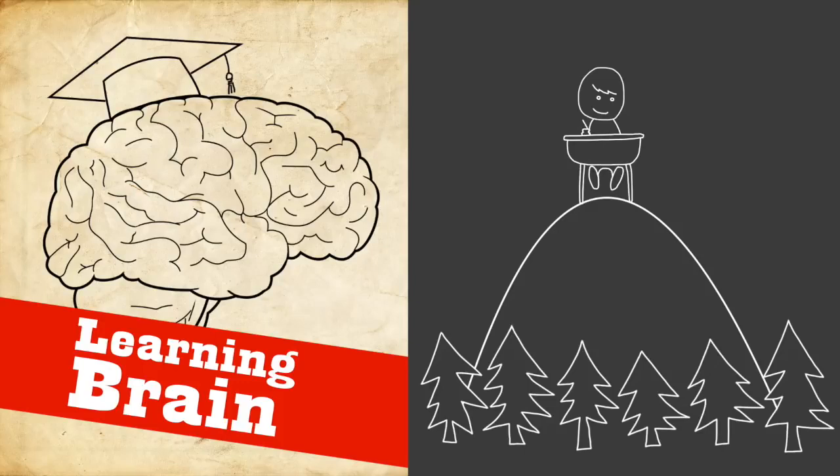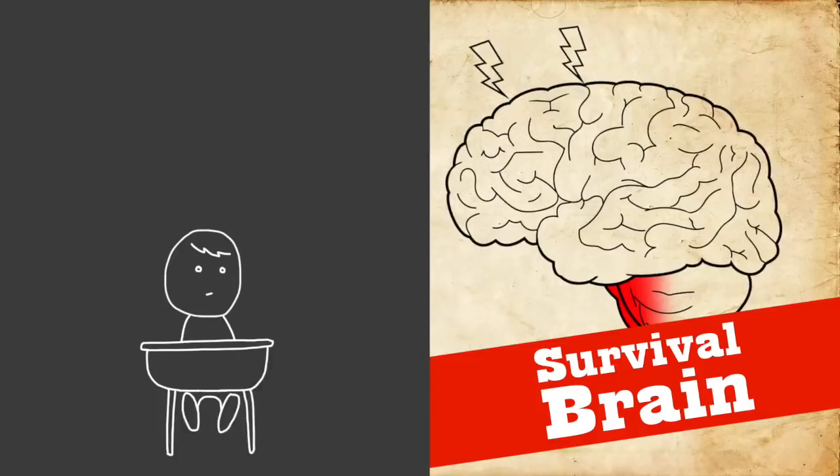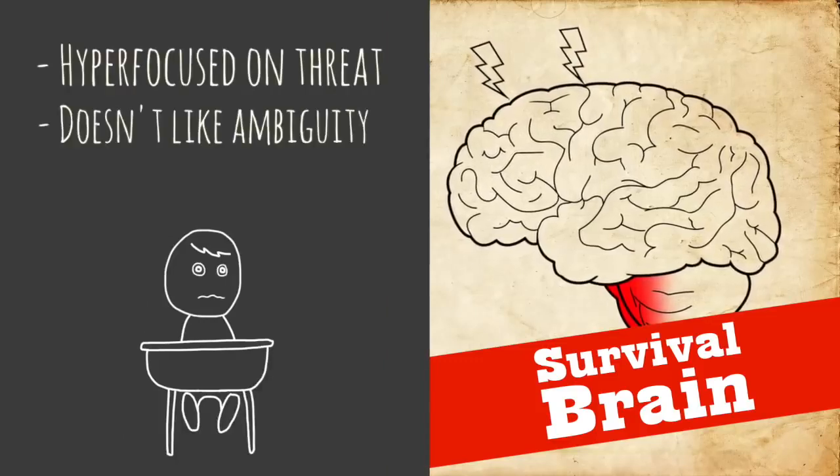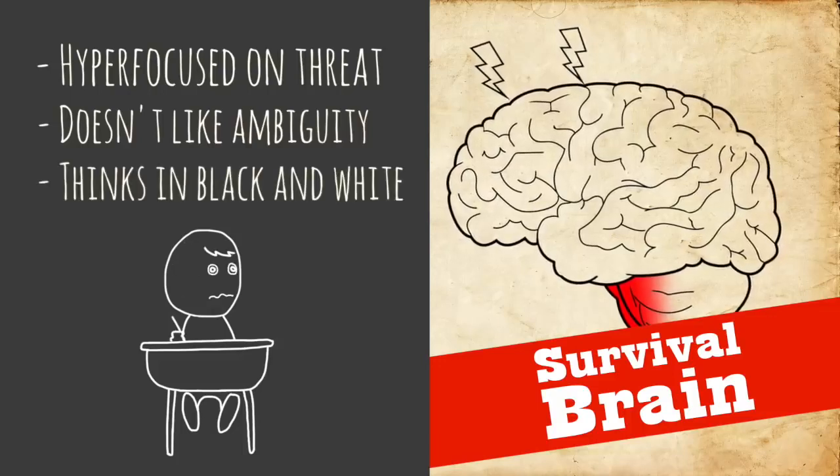Now survival brain on the other hand is completely different. It's hyper-focused on threat. It doesn't like ambiguity. It wants clear hard facts. It thinks in black and white terms. It doesn't want anything to be gray at all.